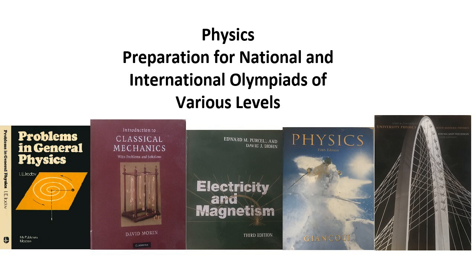The fourth and most difficult level is Olympiad physics. It is assumed that general physics is known in its entirety, with even some familiarity with the basics of modern physics. At this level we no longer study theory, but apply it and practice very tricky problems — most of which stump many university professors. It requires at least a two-year involvement in the Olympic movement.